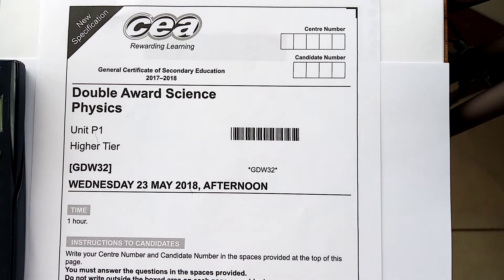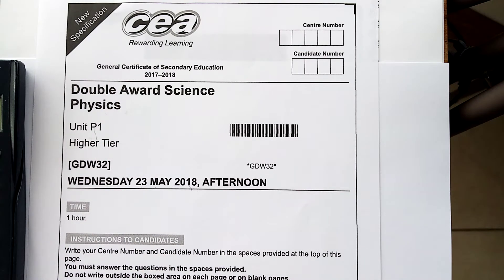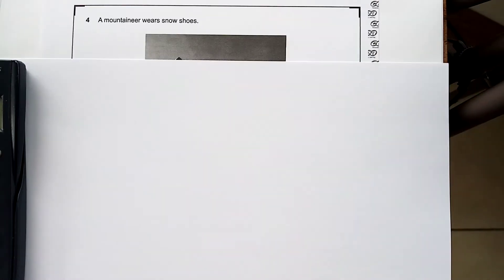So now we're looking at question 4, May 2018, the Board of Physics, Unit 1, the Year 11 paper. And question 4 is about pressure. So we'll do a quick mind map on pressure so we can do the question.